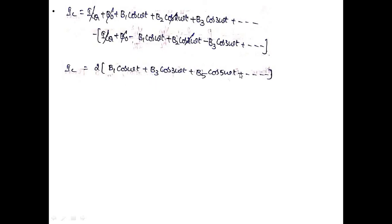Identifying the load current equation, we have only the fundamental frequency B1·cos(ωt) plus odd harmonics at 3ωt, 5ωt, 7ωt, 9ωt, and so on. The even harmonics are completely eliminated. As the harmonic components are reduced, the harmonic distortion also reduces. In Class B push-pull amplifier, even harmonics are removed and only odd harmonics remain.